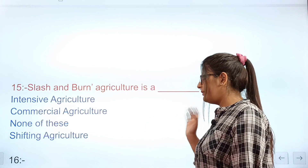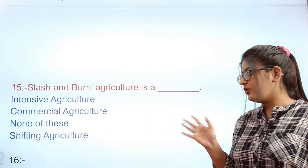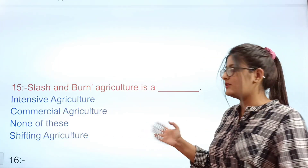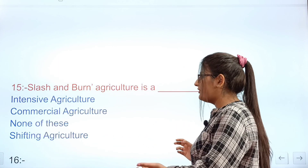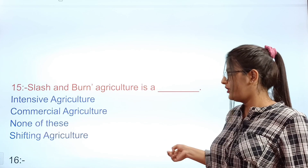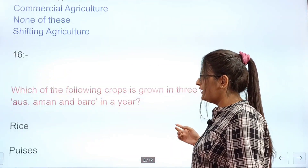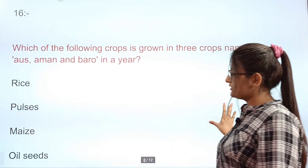Question 15: Slash and burn agriculture is also known as dash. Options: A intensive, B commercial, C none of these, D shifting agriculture. The correct answer is D — shifting agriculture.